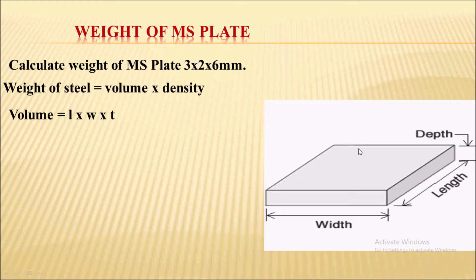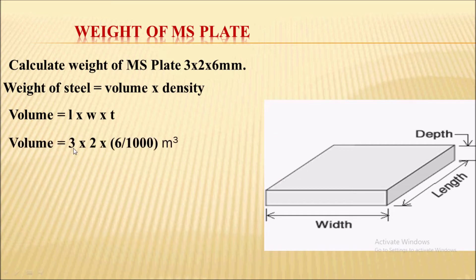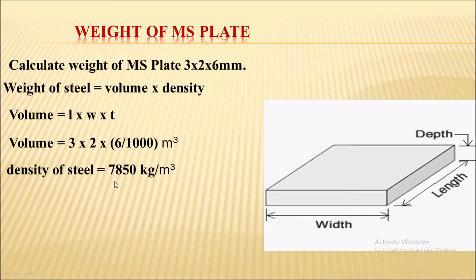Here you can see a diagram. Volume is nothing but area of the plate into depth or thickness. Area will be length into width, and thickness is the depth. So volume equals 3 meter (length) into 2 meter (width) into 6 mm (depth). Here 6 mm is converted into meters by dividing by 1000.